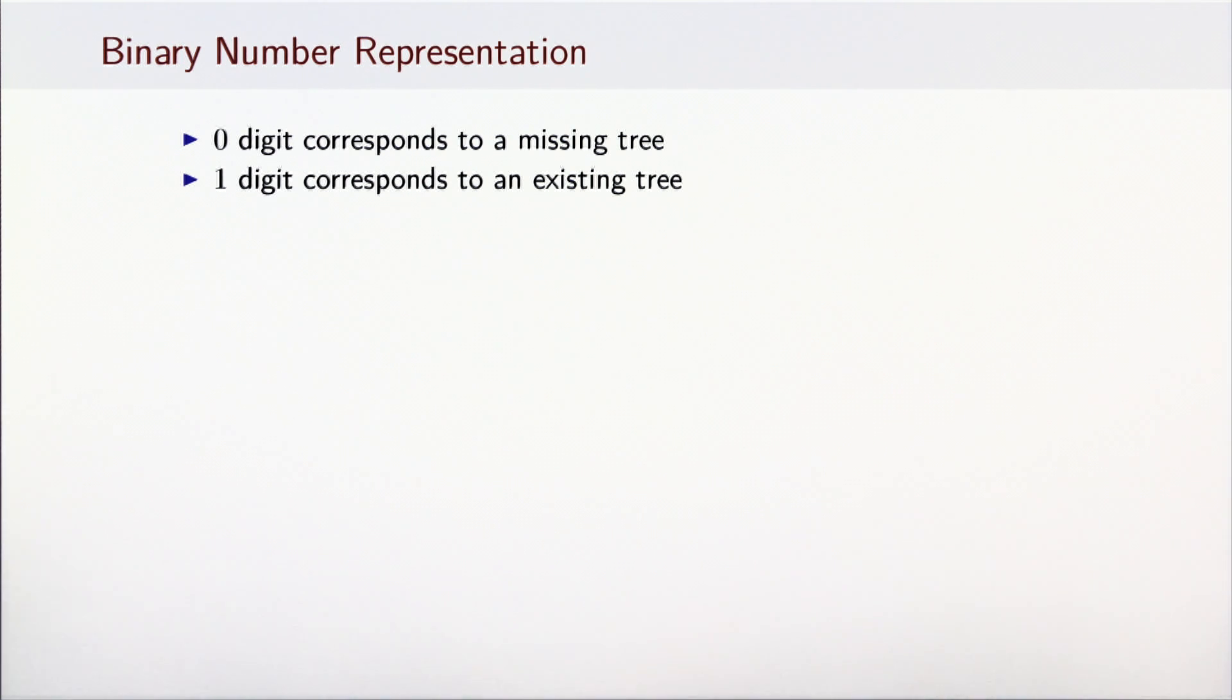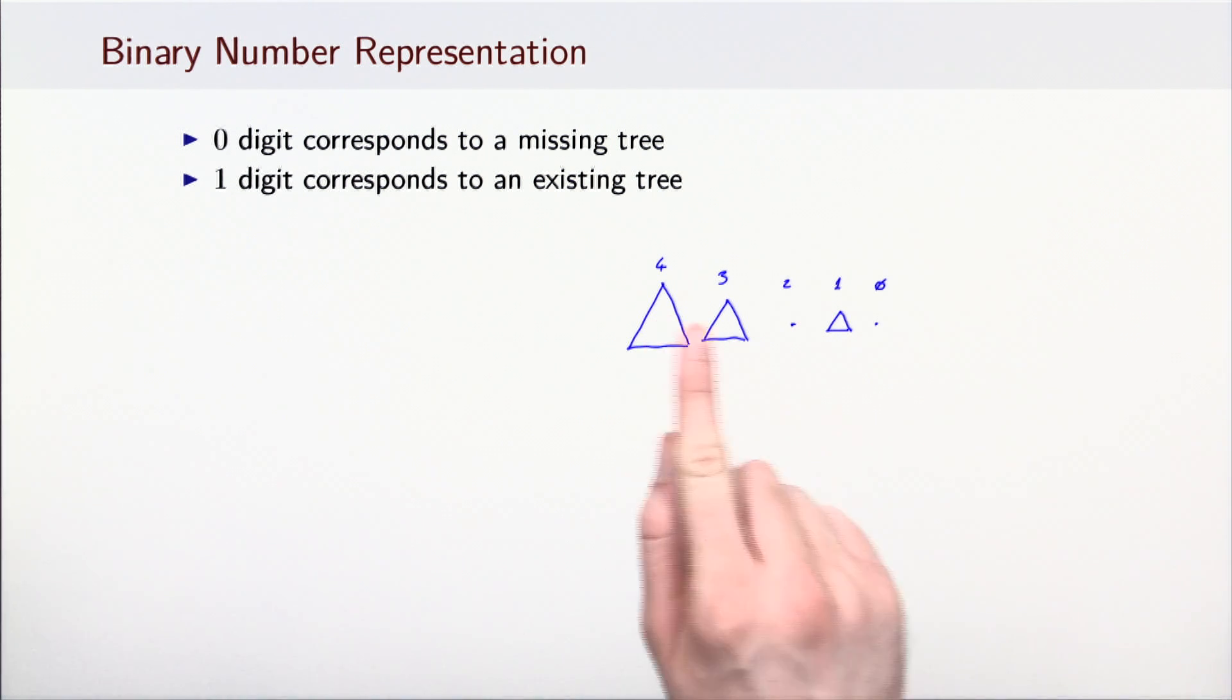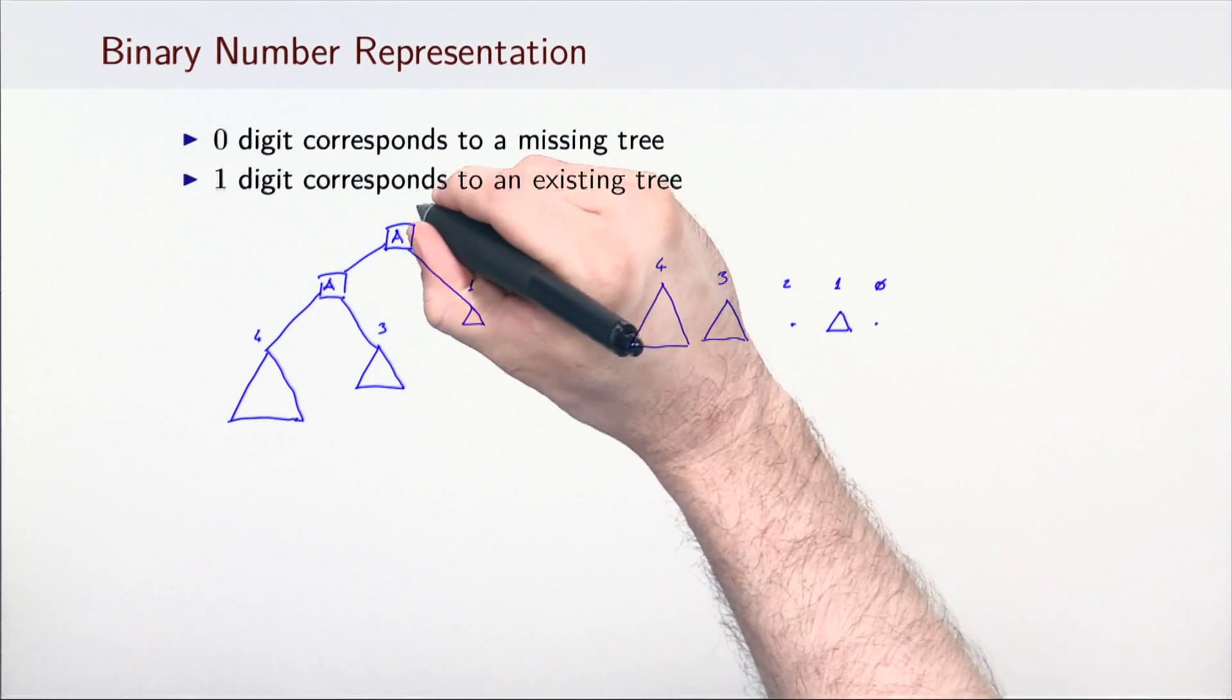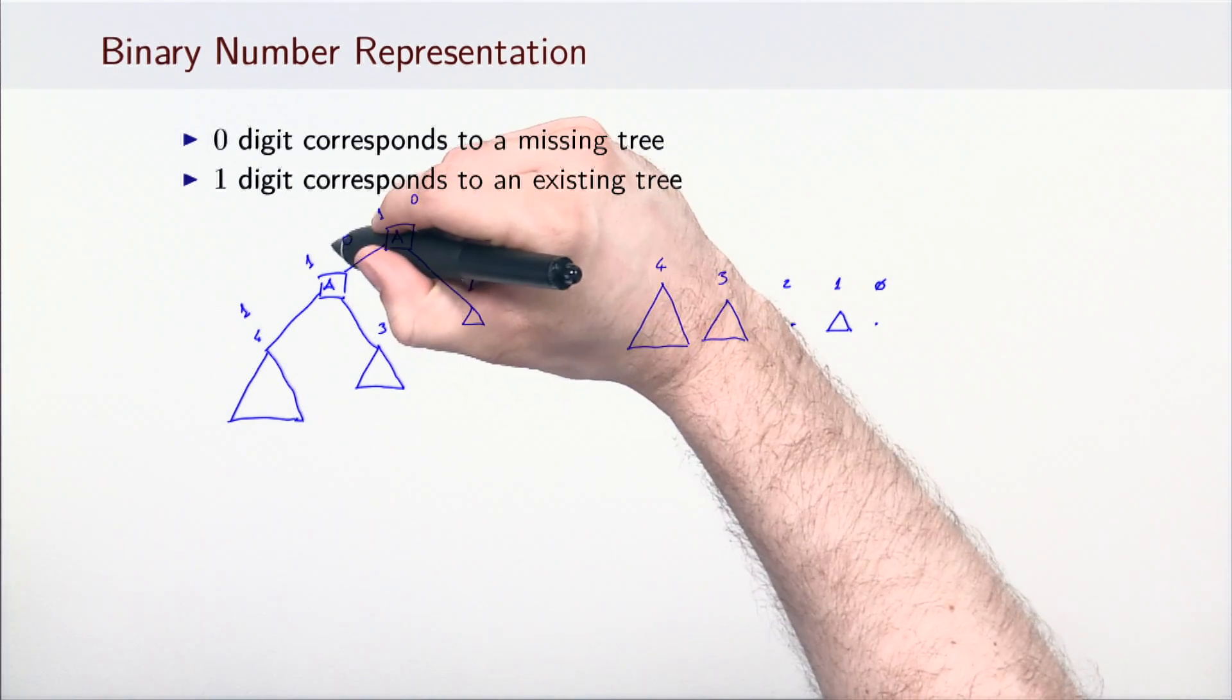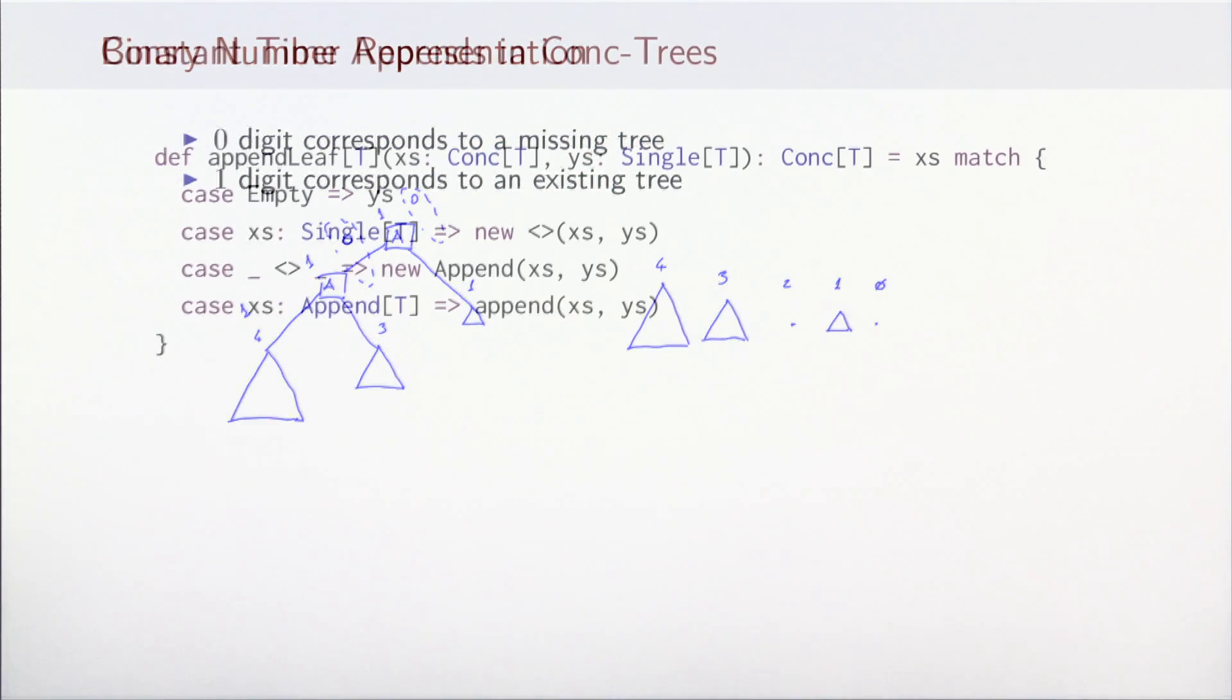We will use the Append nodes to store our binary number. In this binary number representation, the zero digit will correspond to a missing tree and the one digit will correspond to an existing tree. For example, assume that we have the following trees. In this append list, the trees with levels 4, 3, and 1 exist, and the trees with the levels 2 and 0 are not present. The corresponding append list would look as follows. This corresponds to the following binary number 1, 1, 0, 1, 0. Note that we do not explicitly represent the zero digits, they are encoded as missing trees.